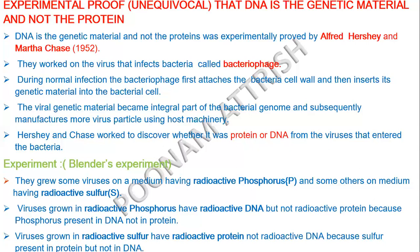Viruses grown in radioactive phosphorus have radioactive DNA but not radioactive protein, because phosphorus is present in DNA, not in protein. Viruses grown in radioactive sulfur have radioactive protein but not radioactive DNA, because sulfur is present in protein but not in DNA.